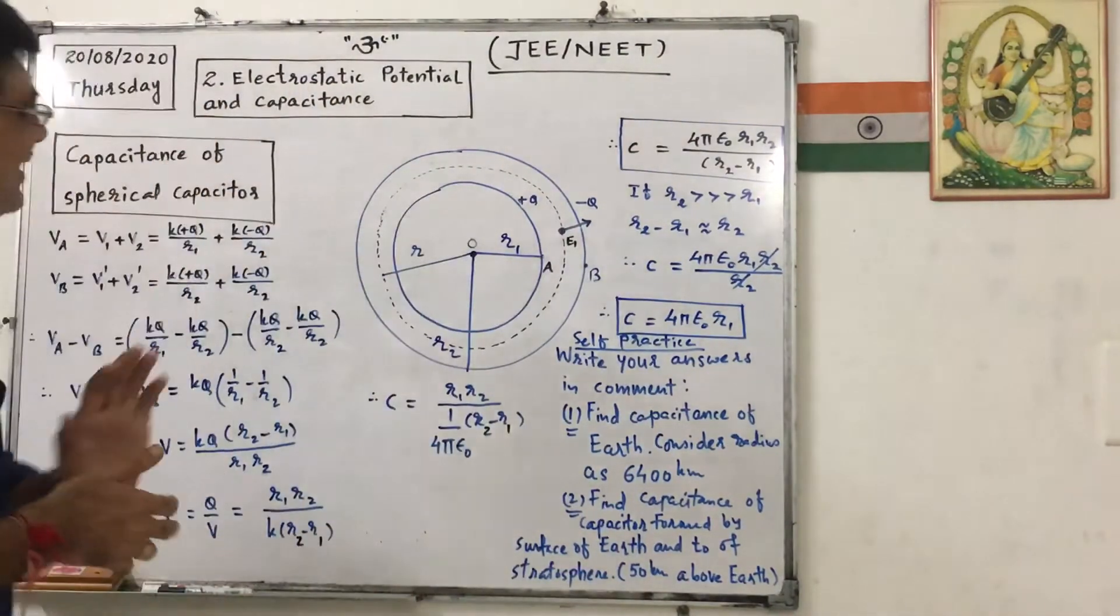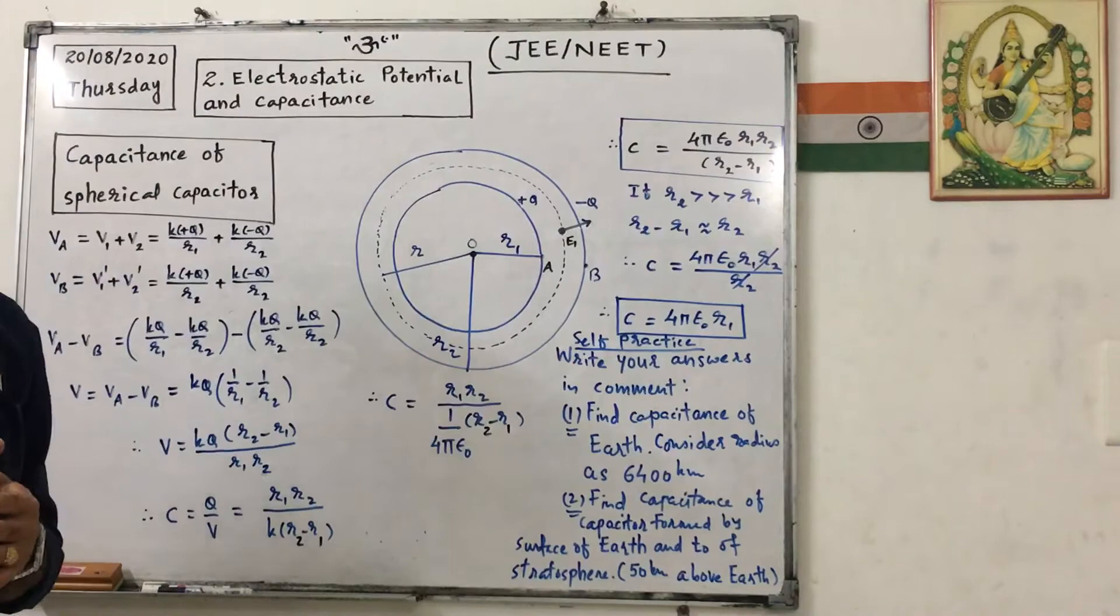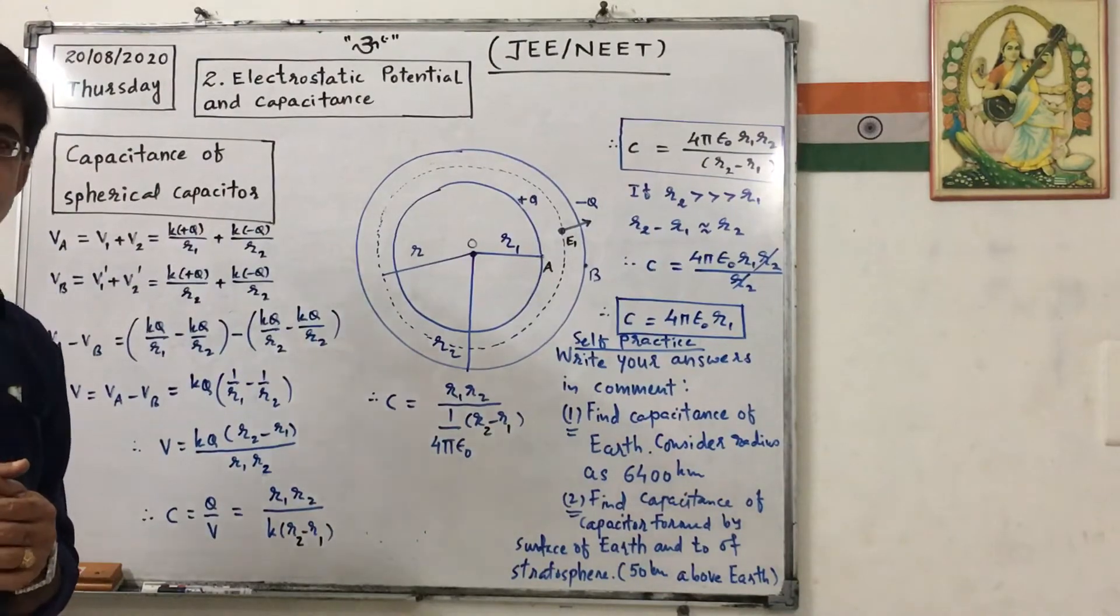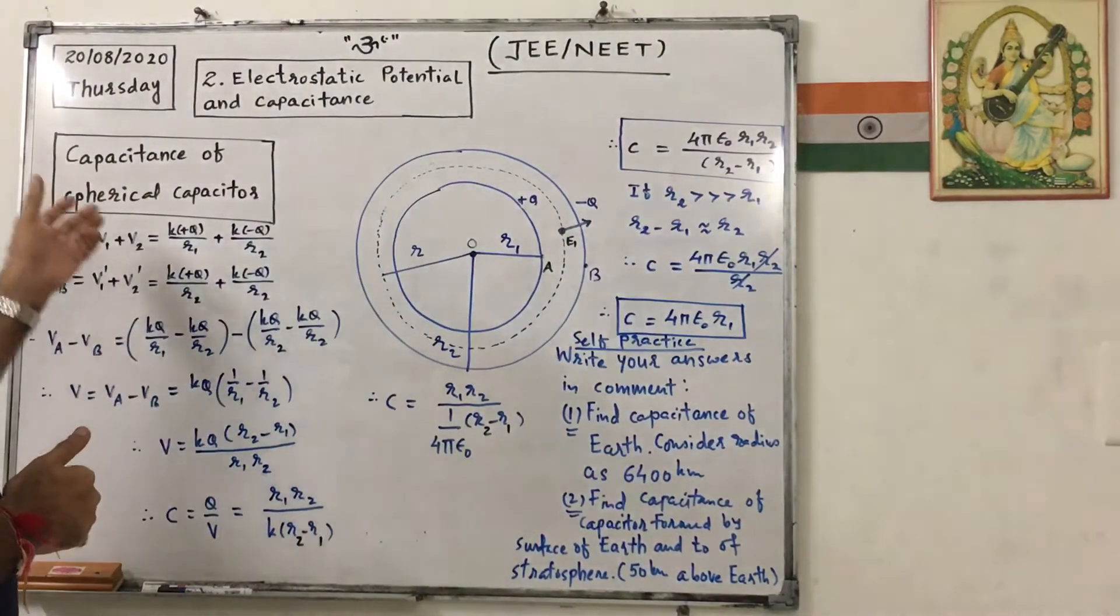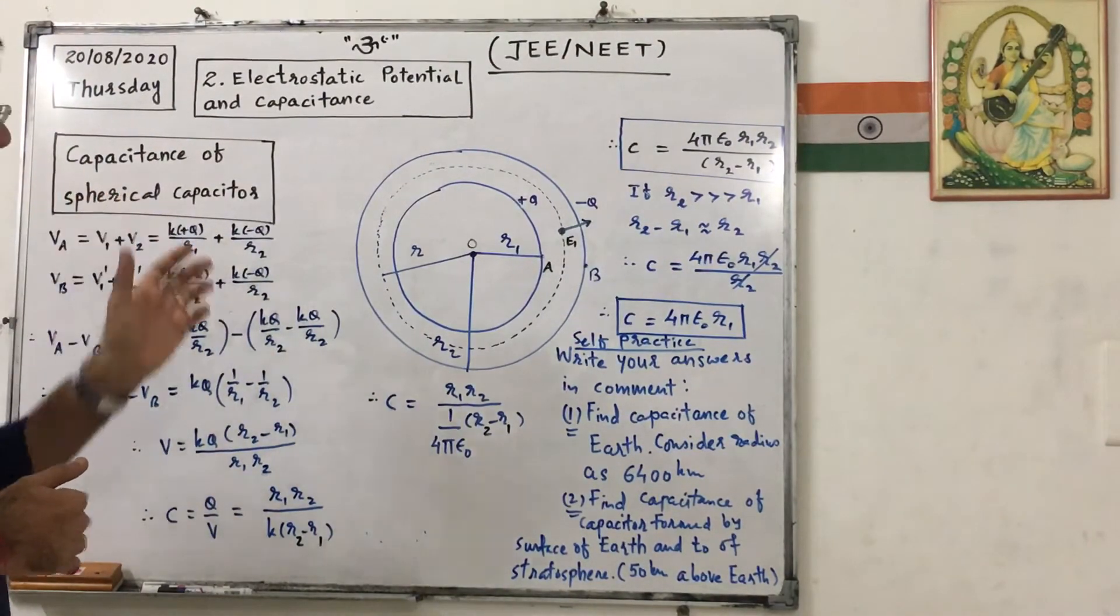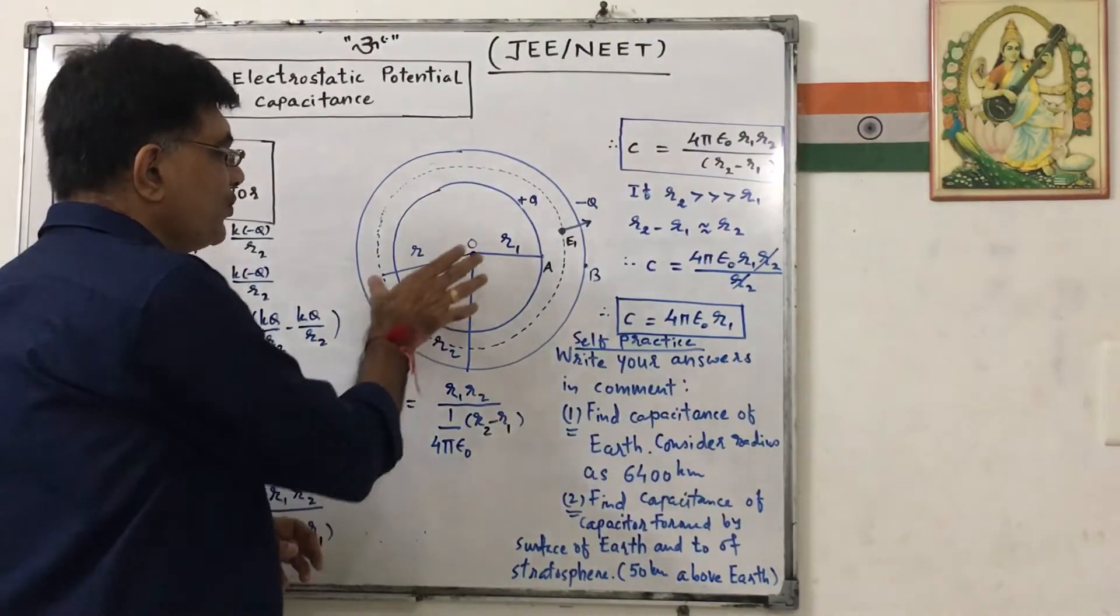This is second lesson: electrostatic potential and capacitance. This topic is not covered in your NCERT text. So this is about capacitance of a spherical capacitor. Spherical capacitor means there are two shells.